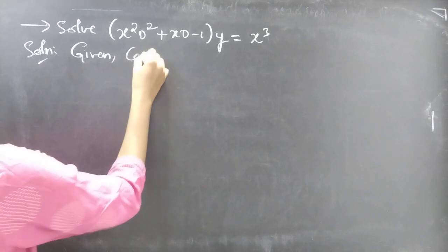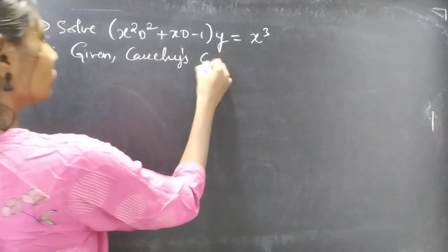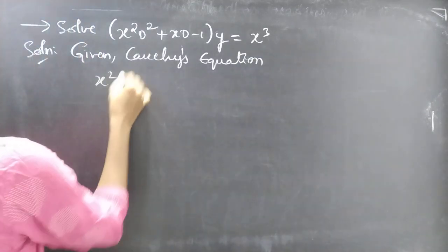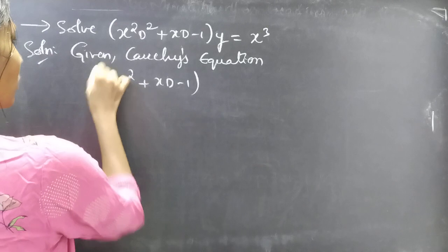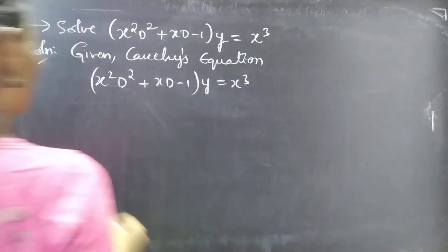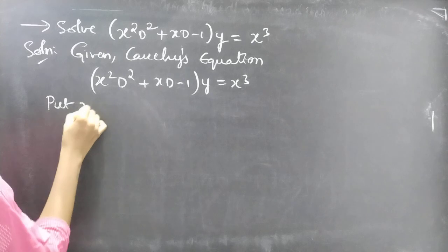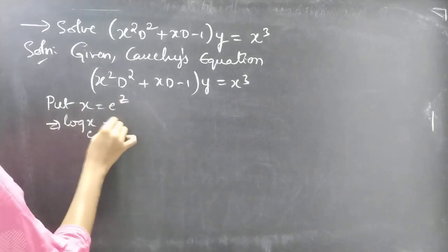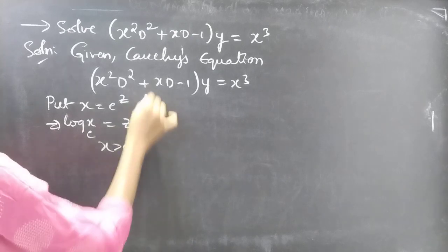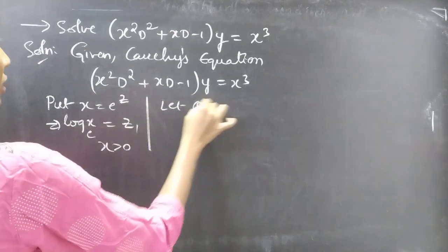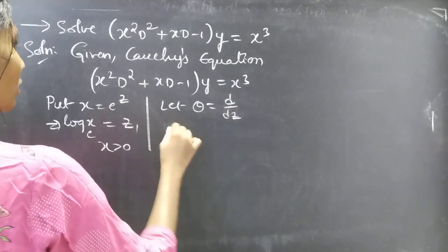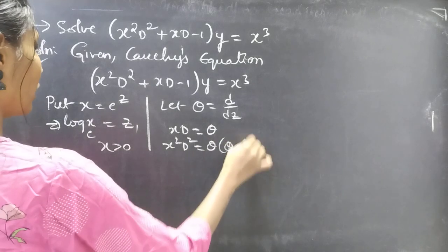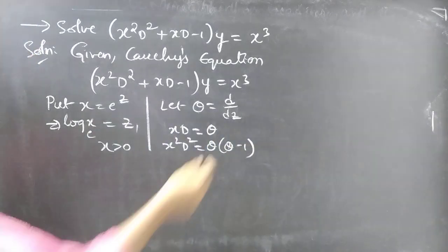Given Cauchy's equation: x²d²y + xdy − y = x³. Now put x = eᶻ, then log x = z. Let θ = d/dz, then xD = θ and x²D² = θ(θ − 1). Here θ is a differential operator with independent variable z.